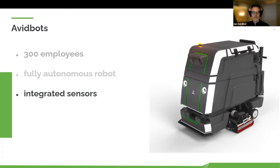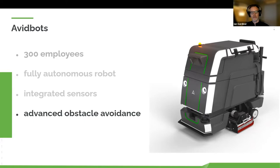One thing special about our robot is it has fully integrated sensors — the pods and housings are designed around the sensors we chose, not added to an existing floor scrubber; they're integrated by design from the beginning. We offer advanced obstacle avoidance with a lot of safety systems. Safety is the highest priority beyond anything else, and we put that into every design review. We're building safe robotics that can enhance what people in the cleaning industry are doing every day.